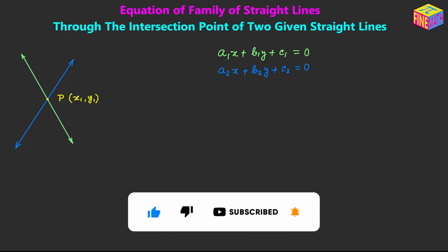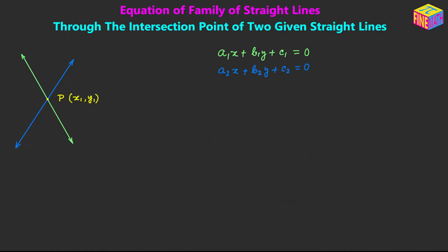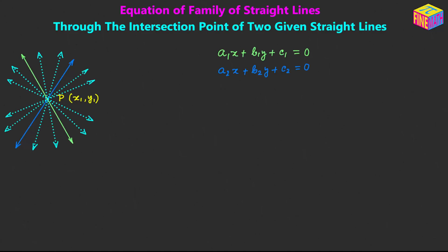So through the point P, how many straight lines can we draw? Well, actually we can draw an infinite number of straight lines. I have drawn a few here and you can draw as many as you want. So the question is: what would be the general equation of those infinite number of straight lines? That's exactly what we are going to derive here.